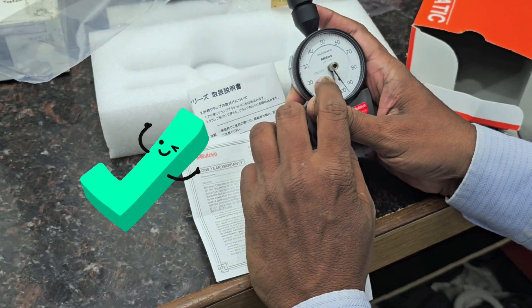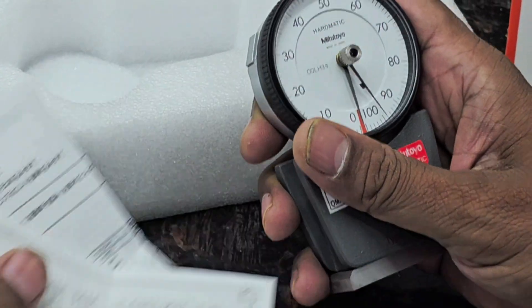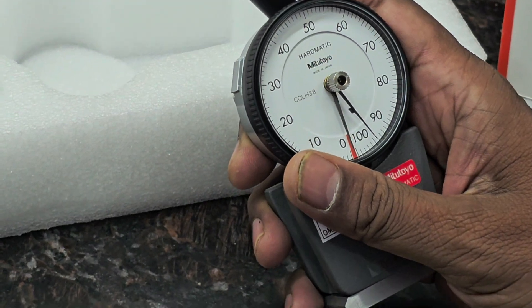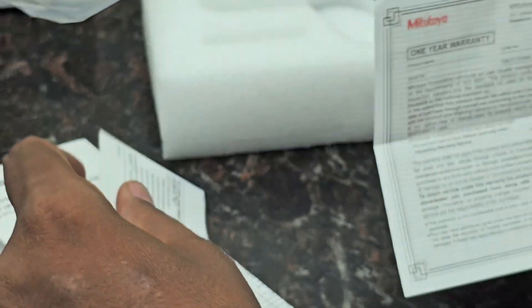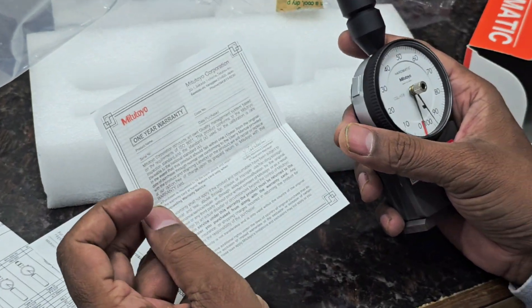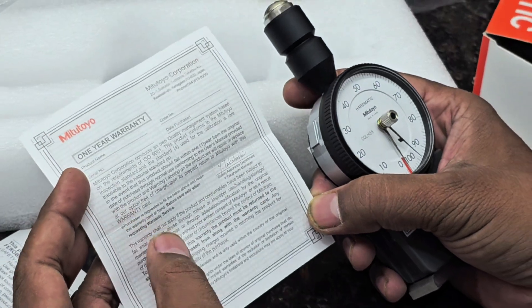One-year warranty. The serial number is CCLH38. You can write your serial number and date of purchase for the one-year warranty. For warranty claims, please read the warranty certificate material carefully.